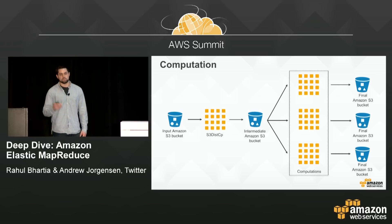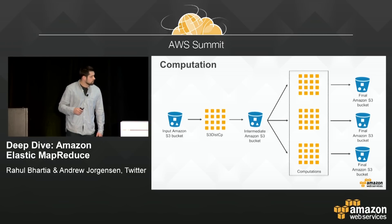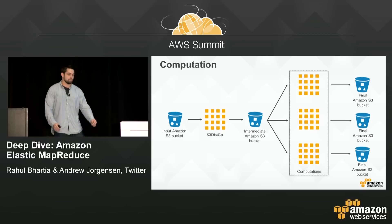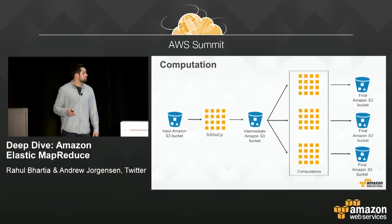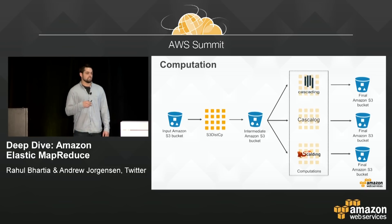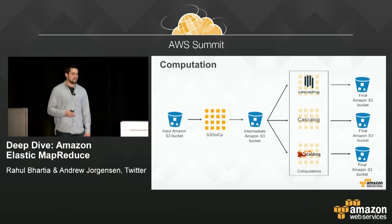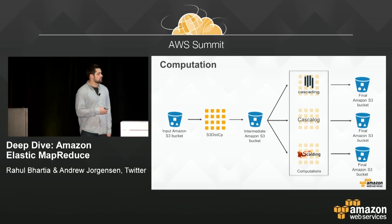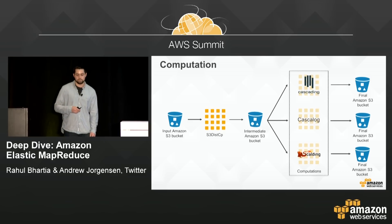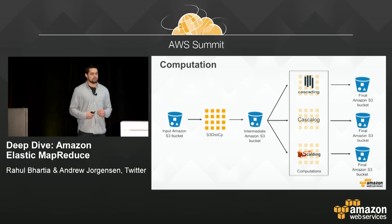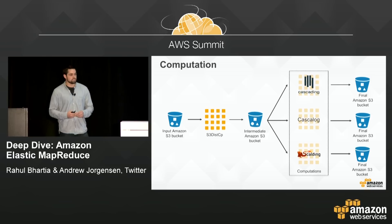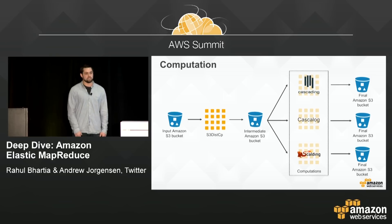We then trigger all of our computations, which each run on their own ephemeral EMR clusters. This may sound expensive, but we use spot instances almost exclusively to save a lot on compute cost. We can start any number of computations to compute all those metrics without spending a lot of money. After the jobs are done, they write results back to S3. We use Cascading — a Java abstraction on MapReduce — and have also used Cascalog (a Clojure DSL on top of Cascading) and Scalding (a Scala DSL). The flexibility of EMR lets you bring the tools that make you most effective to the platform.